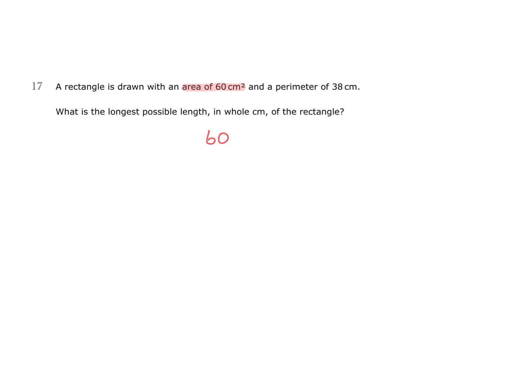Factors are pairs of numbers which multiply to give the target. Every number has 1 and itself as factors, so we can say 1 times 60 would give 60. It's an even number, so 2 will also be a factor, 2 times 30 gives 60. 3 is a factor as well, 3 multiplied by 20 gives 60. 4 is a factor, 4 times 15 makes 60. 5 is also a factor, 5 times 12 is 60. 6 is a factor too, 6 times 10 is 60. These are all the factors of 60.